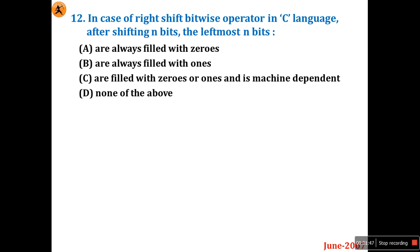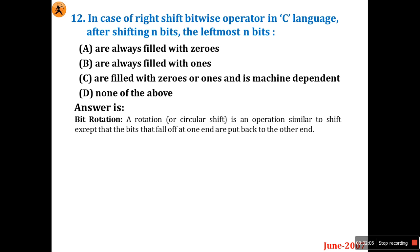Question 12: In the case of the right shift bitwise operator in C language, after shifting n bits, the leftmost n bits are always filled with zeros, always filled with ones, filled with zeros or ones and is machine dependent, or none of the above. Most of the time the answer given is always filled with zeros, but you cannot say that is correct for all situations.